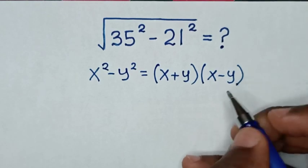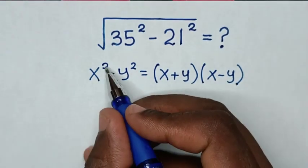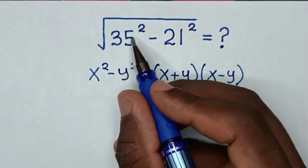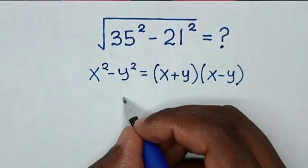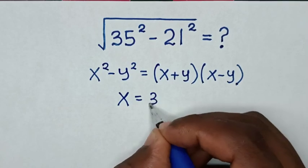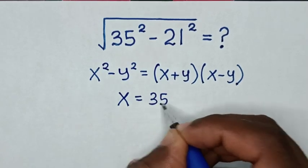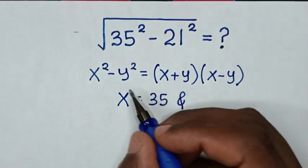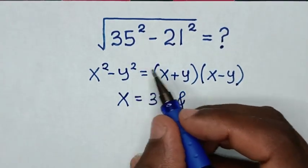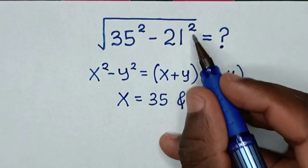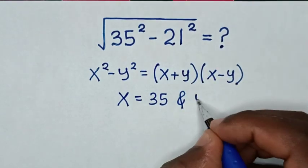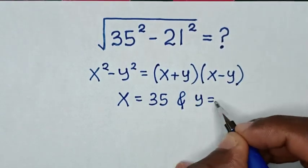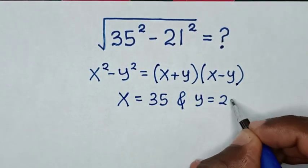When we compare x squared with 35 squared, then x is equal to 35. And when we compare y squared with 21 squared, then y is equal to 21.